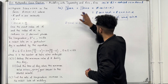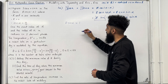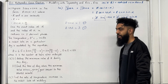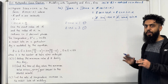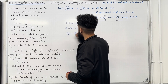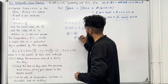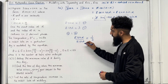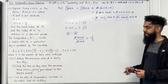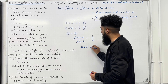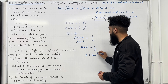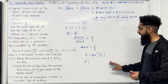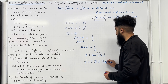Looking at the coefficient of cos x, I can see that r cos alpha must equal 3. This is equation 1, and r sin alpha equals 1 is equation 2. Dividing equation 1 by equation 2 gives r sin alpha over r cos alpha equals 1 over 3. The r's cancel, giving tan alpha equals one third. Hence alpha equals tan inverse of one third, which is precisely 0.322 to 3 decimal places.